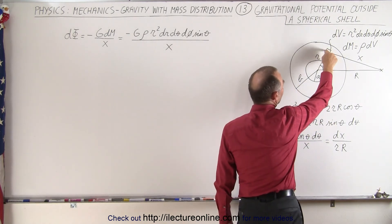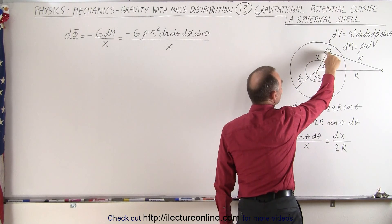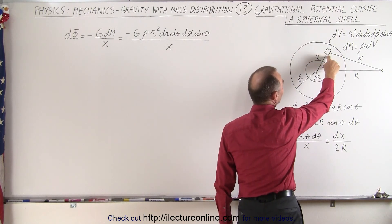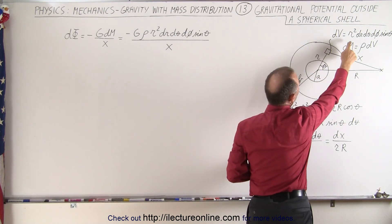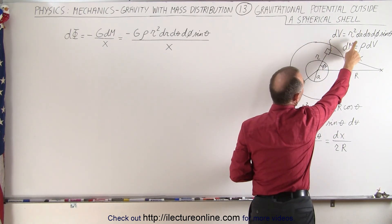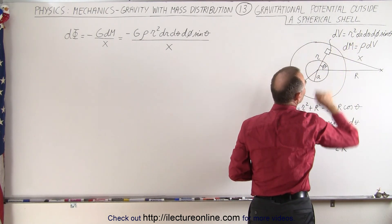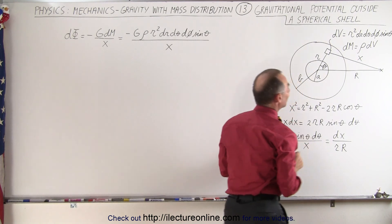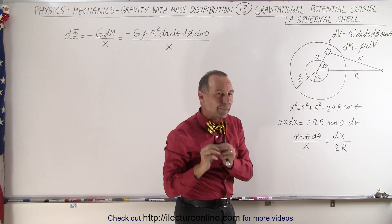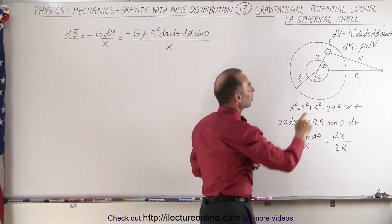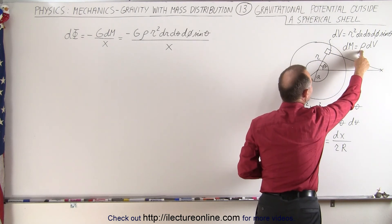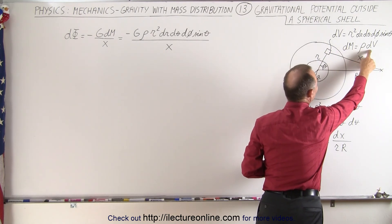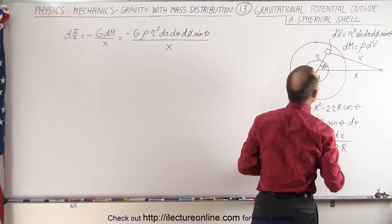We're going to take a small element right here. The volume of that, since we're dealing with spherical coordinates, is going to be r² dr dθ dφ times the sine of θ. If we want to find the mass of that small volume element, it's going to be equal to the density of the material, ρ, times the volume dV.